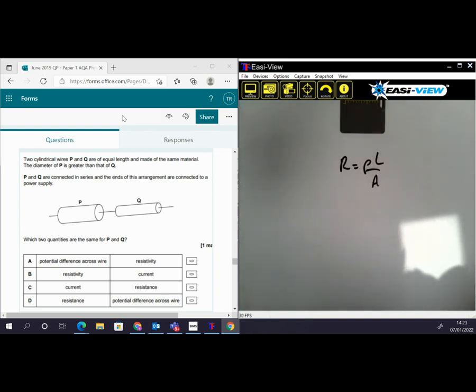So the resistances are different, which rules out C and D as well. So the resistances have to be different because the cross-section areas are different. And because the resistances are different, the potential differences will be different.